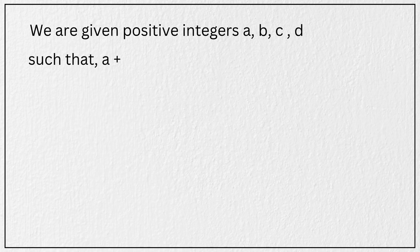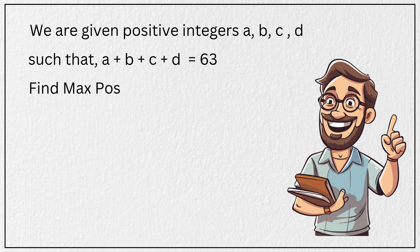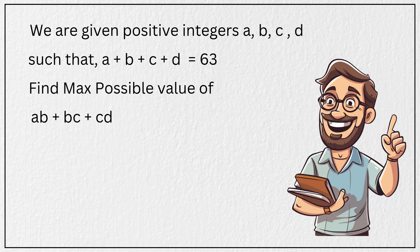such that sum of A plus B plus C plus D is equal to 63. And the question is to find the maximum possible value of the expression A times B plus B times C plus C times D.